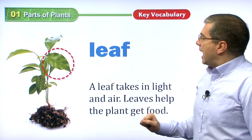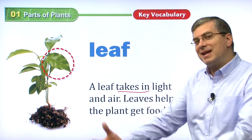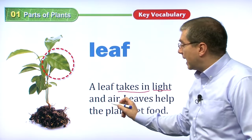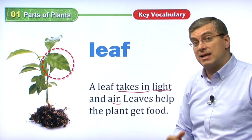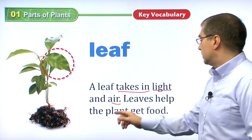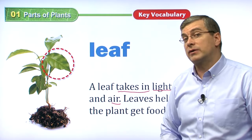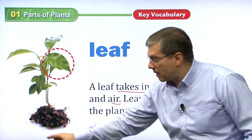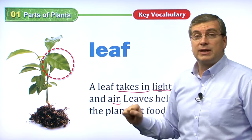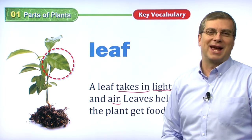So here we have the leaf. What does the leaf do? A leaf takes in light and air — two things that help the plant grow. Leaves help the plant get food. The plant gets food from two parts: the roots take in water and some food from the soil, and the leaves take in air and sunlight — those are the things that help the plant grow to be bigger.